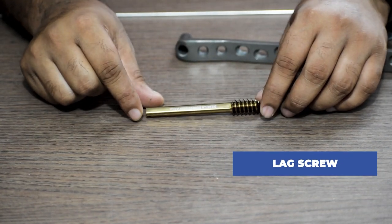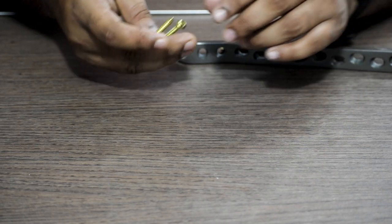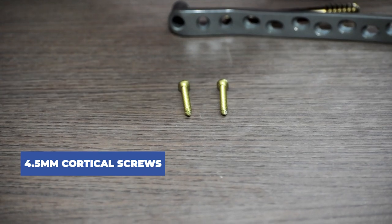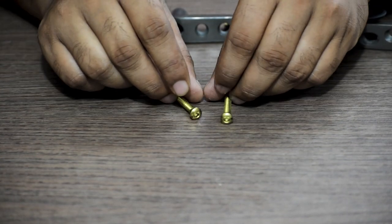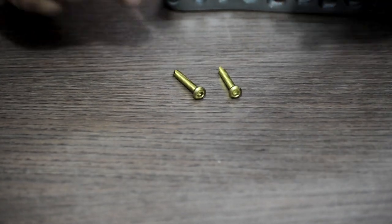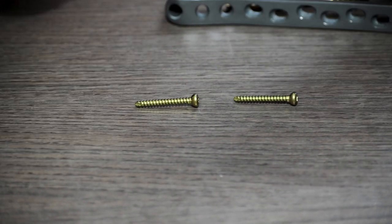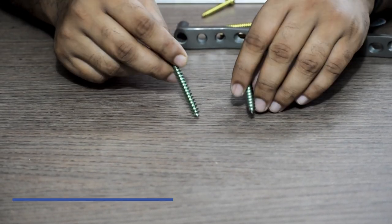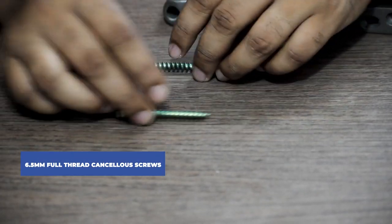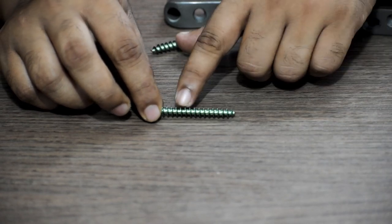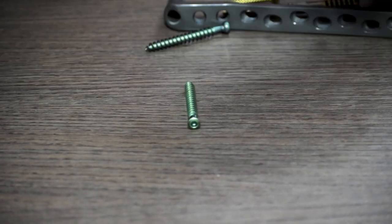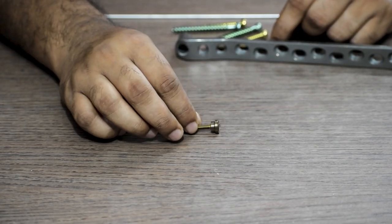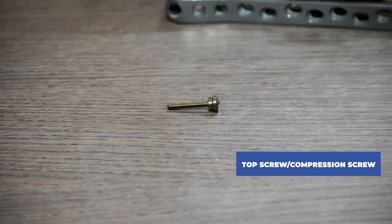The next is lag screw, also known as a hip screw. We will also require 4.5mm cortical screws. Then we will require 6.5mm full thread canceller screws. As you can see, it's fully threaded. This is the top screw, also known as the compression screw.